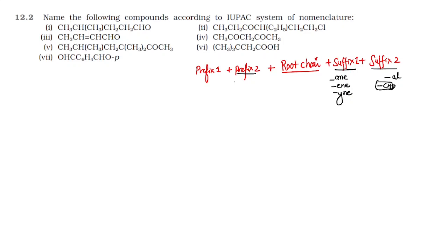Prefix 2 is lower priority functional groups. In prefix 1 and prefix 2, suffix 1 will be the higher priority function, so we call it the functional root. In prefix 2, we can apply branches. So this way we will use the root chain. First, we will take root chain, suffix 1 and suffix 2, then prefix 1 and prefix 2.